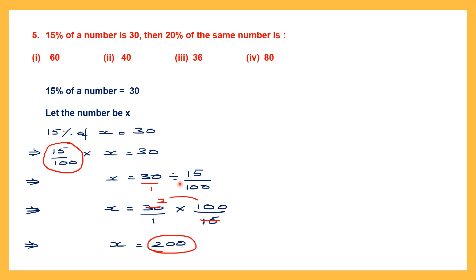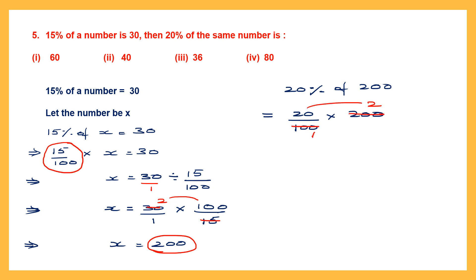Now going back to the question: 20% of the same number means 20% of 200. That is 20 by 100 into 200. Cancelling zeros: 100 into 2 is 200, then 20 into 2 is 40. So 40 by 1 equals 40. Our answer is 40, and that is option 2.